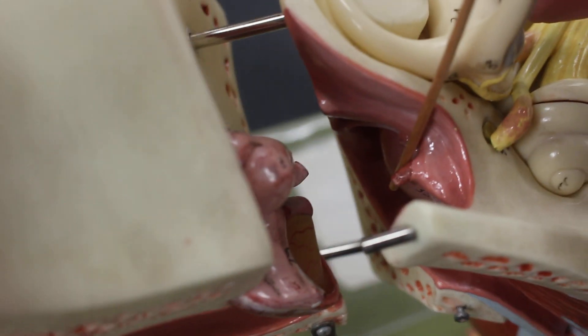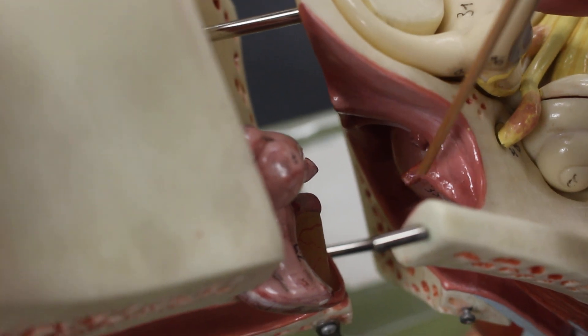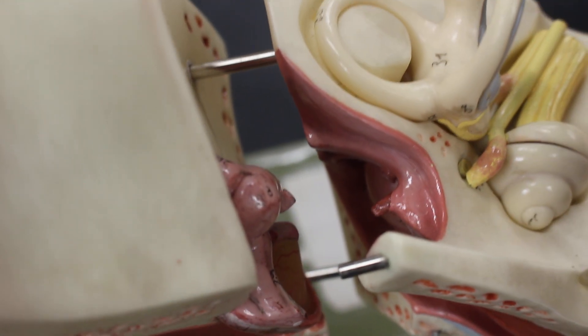Within the middle ear, you find the auditory ossicles, which include the malleus, the incus, and way over here, the stapes. The malleus, incus, stapes—the stapes fitting into the oval window over here.